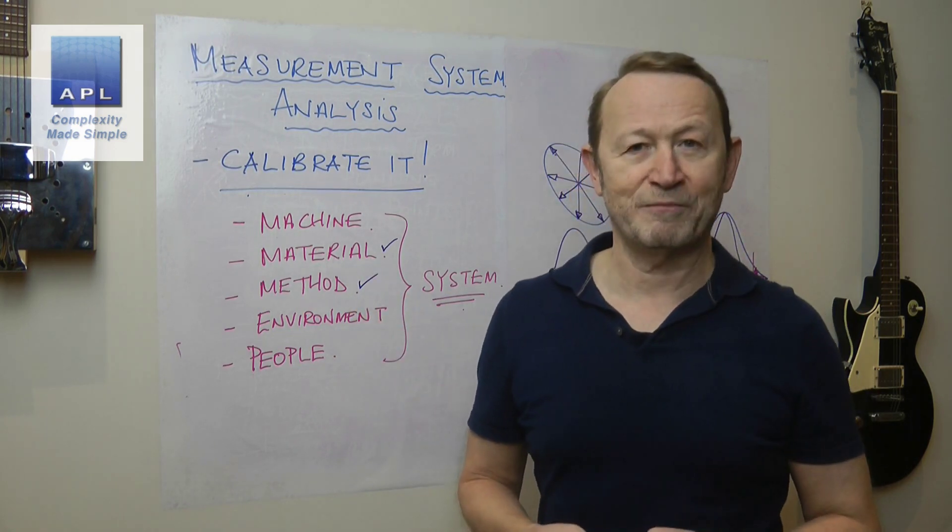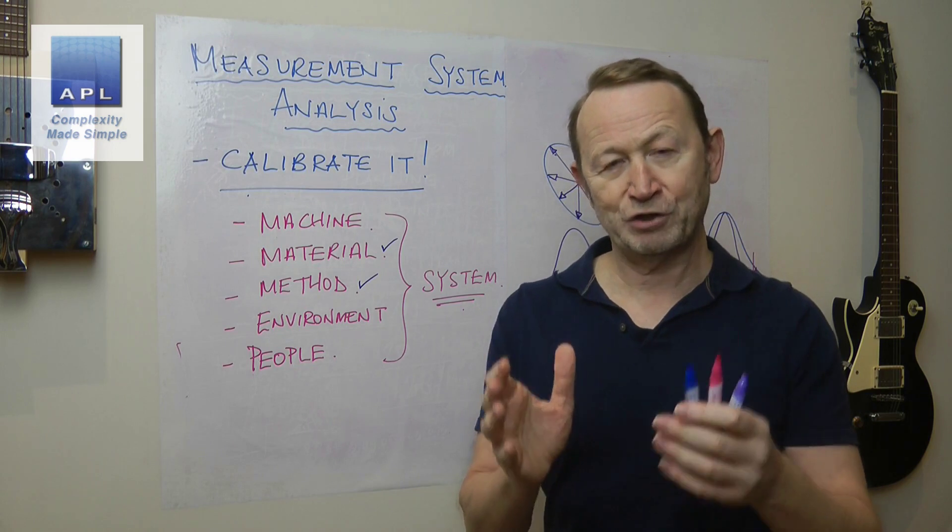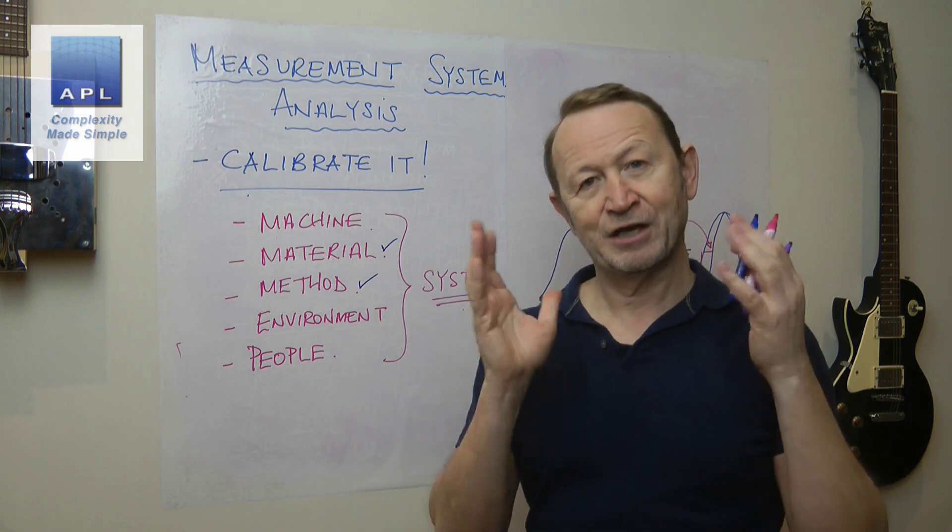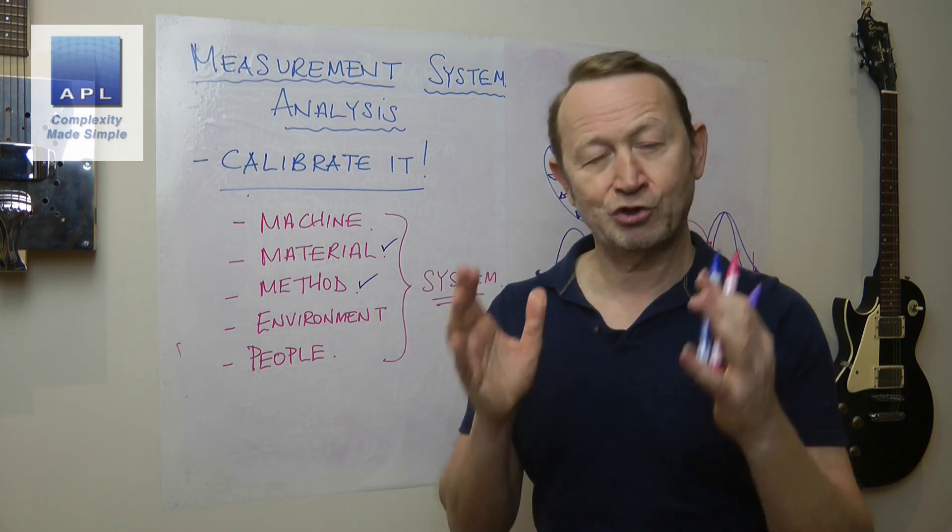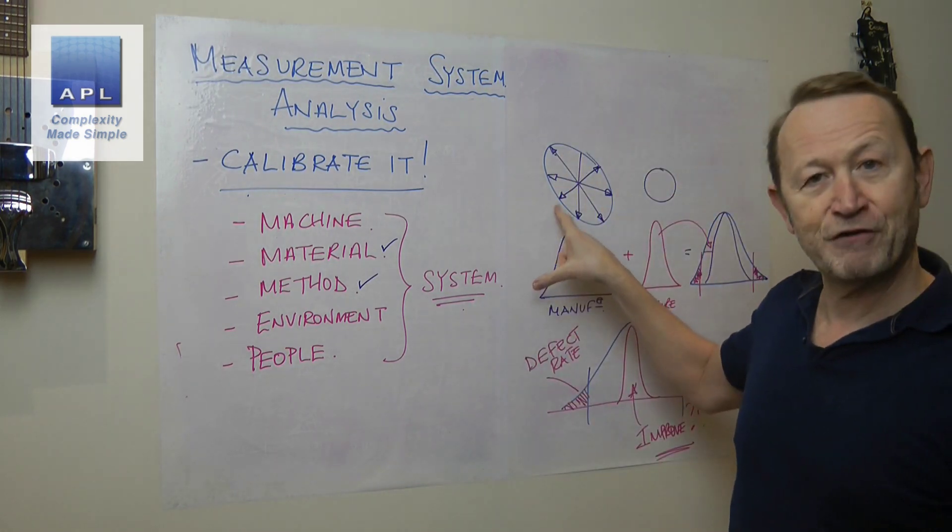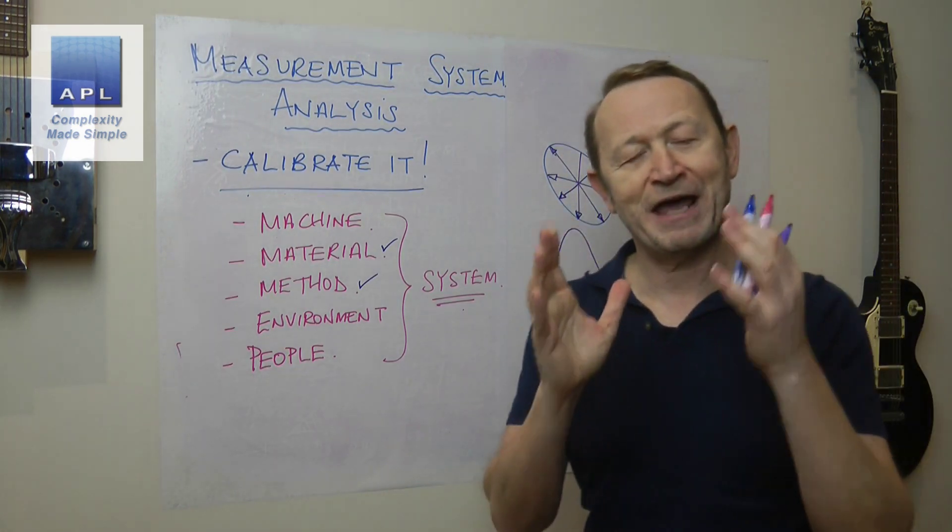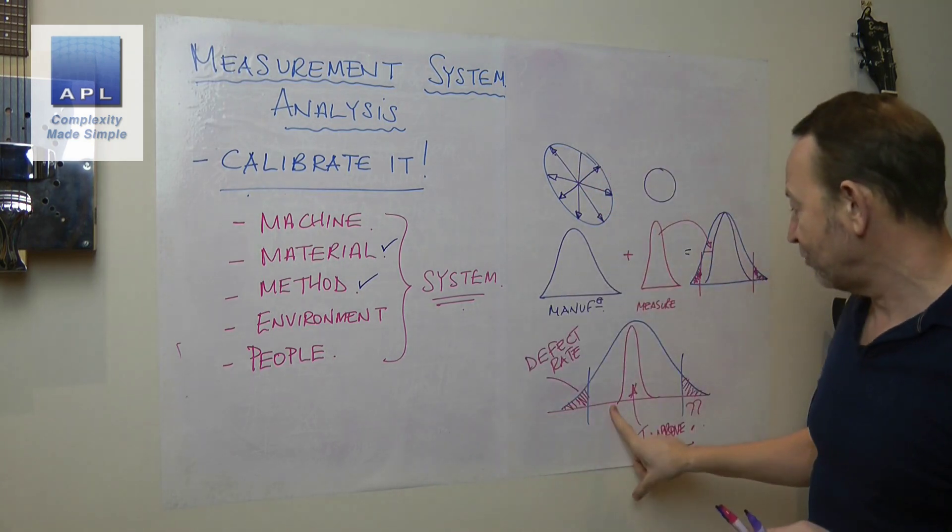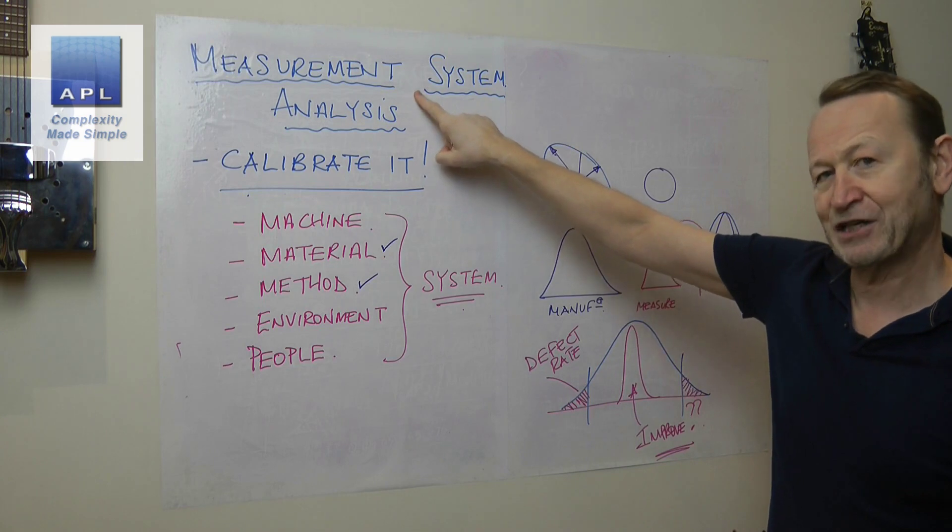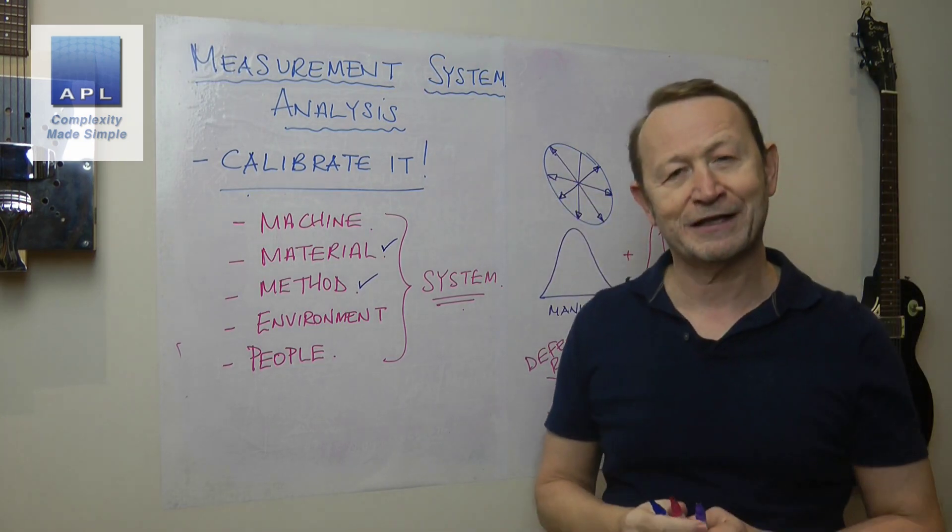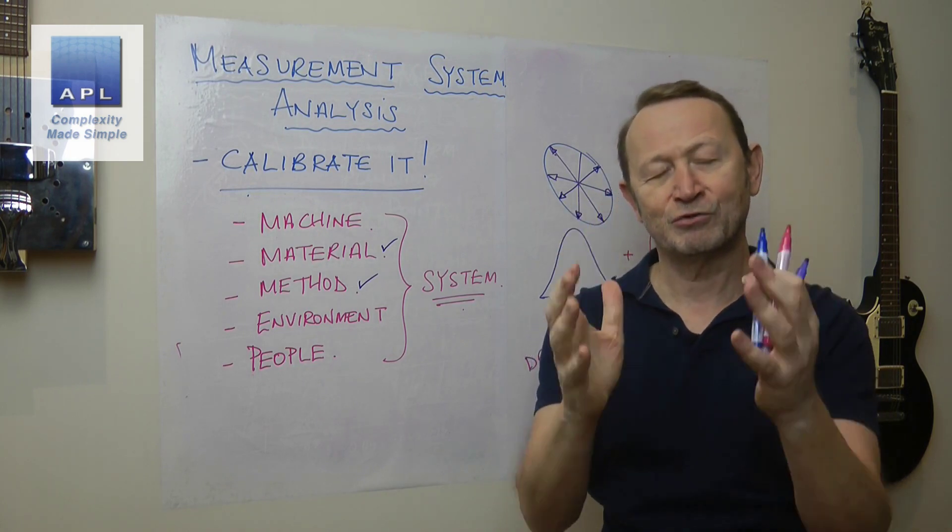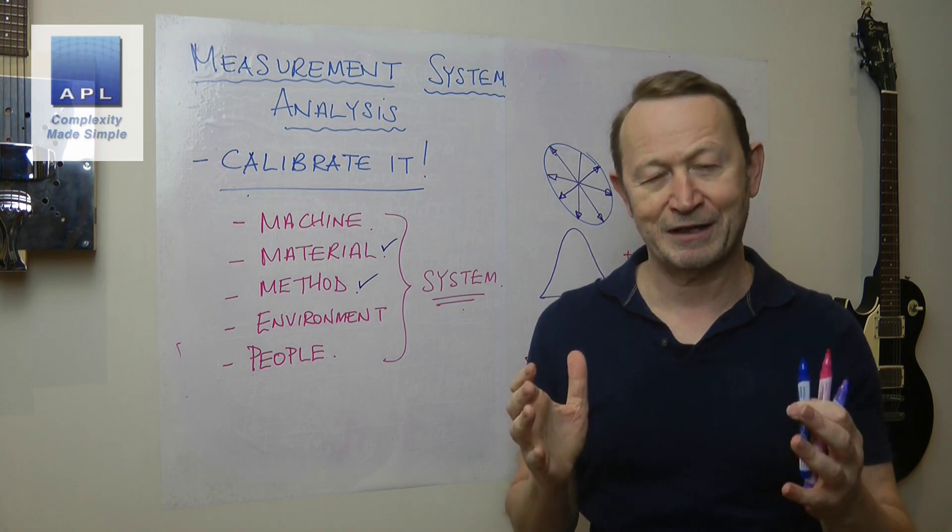Whereas calibration happens once for the equipment, MSA belongs to the task, the method, and the material that you're asking the equipment to measure. And therefore you could have one piece of measuring equipment with 20 MSAs, because you are asking it to measure 20 different components, 20 different shapes, 20 different elements of problem. You have an MSA for each one of them, you have a capability result for each one of them, and this is a route to improving the capability. Measurement System Analysis: use it and improve your process capability.